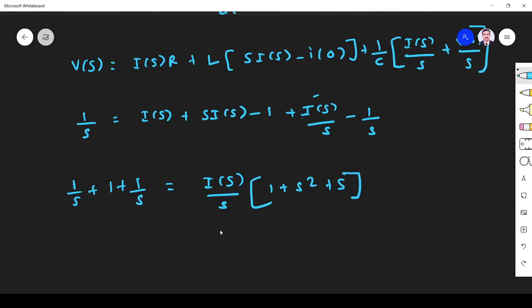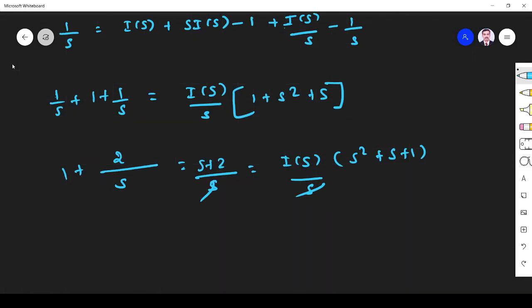So what I get is s. Now I see this is s. This is 2/s. So 2/s + 1, that is equal to (s+2)/s equals s. So I(s)(s²+s+1)/s. S has cancelled. What is my I(s)?